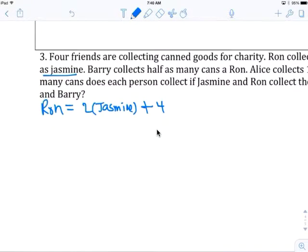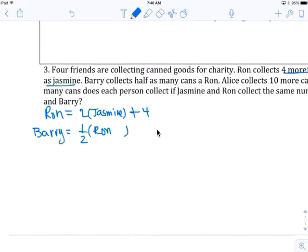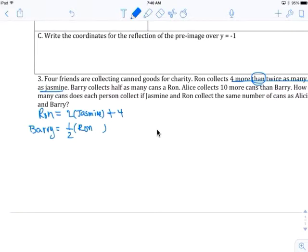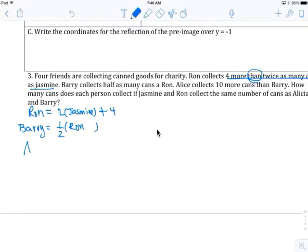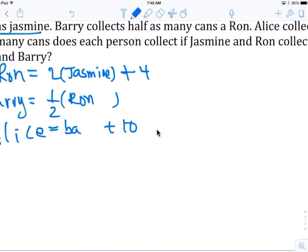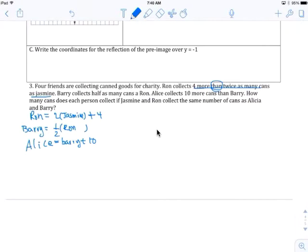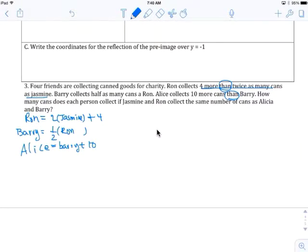Barry collects half. Collects half. Half is one half times Ron. Alice collects ten more cans than Barry. Alice is plus ten then Barry. Why ten is in the back is because it's 'than' - we flip.